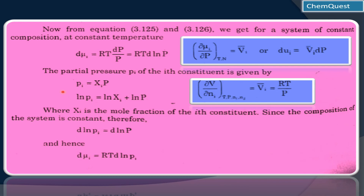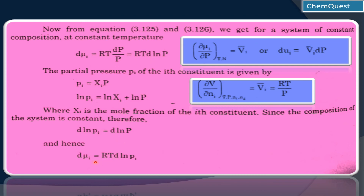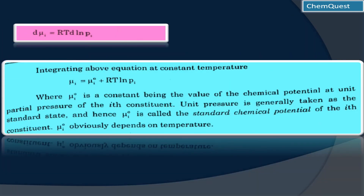Therefore, dμᵢ — the chemical potential of any component — becomes equal to RT d(ln Pᵢ), where we replace P with the partial pressure Pᵢ of the i-th component, because we are considering the composition of the system to be constant and hence equate the i-th component's pressure to the total pressure. Now we need to integrate this equation dμᵢ = RT d(ln P) at constant temperature.